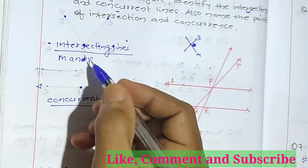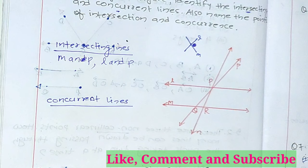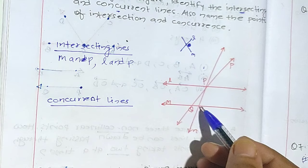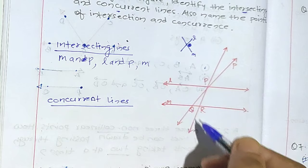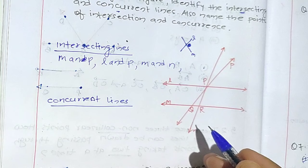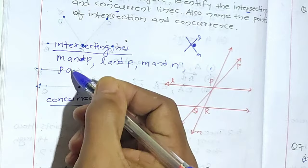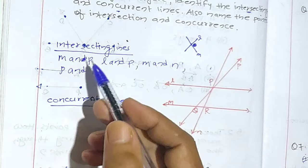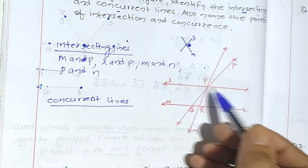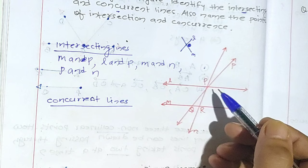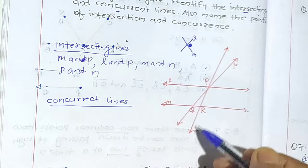The next intersecting lines will be m and n — this is the m line and this is the n line, they are intersecting here, and this is the common point. So m and n. One more pair of intersecting lines will be p and n — this p and n are intersecting here. So the intersecting lines we got are: m and p, l and p, m and n, and p and n.